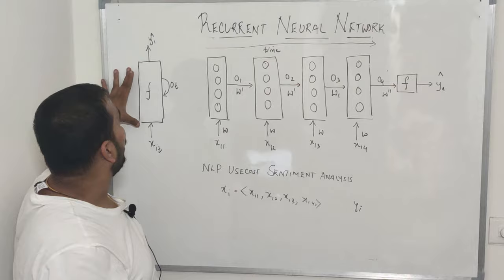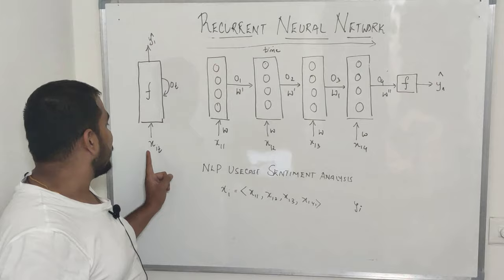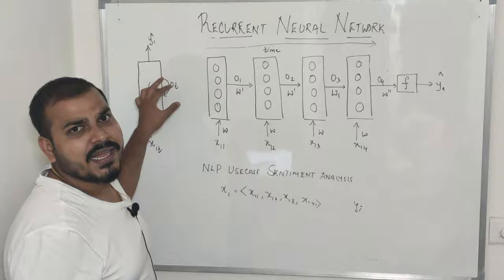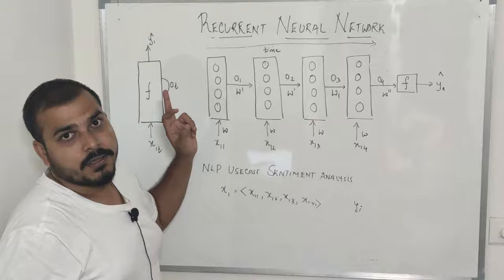Here, this is my input, and this input may be of any number of dimensions — basically any number of features. Then this is my hidden layer, where I can have any number of hidden neurons. And finally, I have my output. Along with this particular output, we also get output with respect to time.